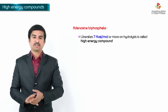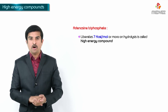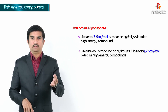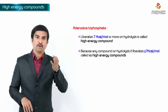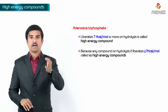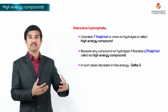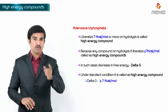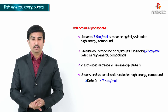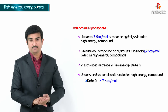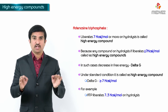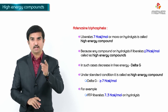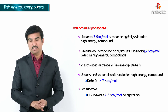ATP is a compound that liberates 7 kilocalories per mole of energy on hydrolysis. That is the reason it is called a high energy compound — because any compound that liberates greater than or equal to 7 kilocalories per mole on hydrolysis is called a high energy compound. In such cases there will be a decrease in free energy represented as delta G. Under standard conditions, delta G is greater than or equal to minus 7 kilocalories per mole. For ATP specifically, delta G is minus 7.3 kilocalories per mole.